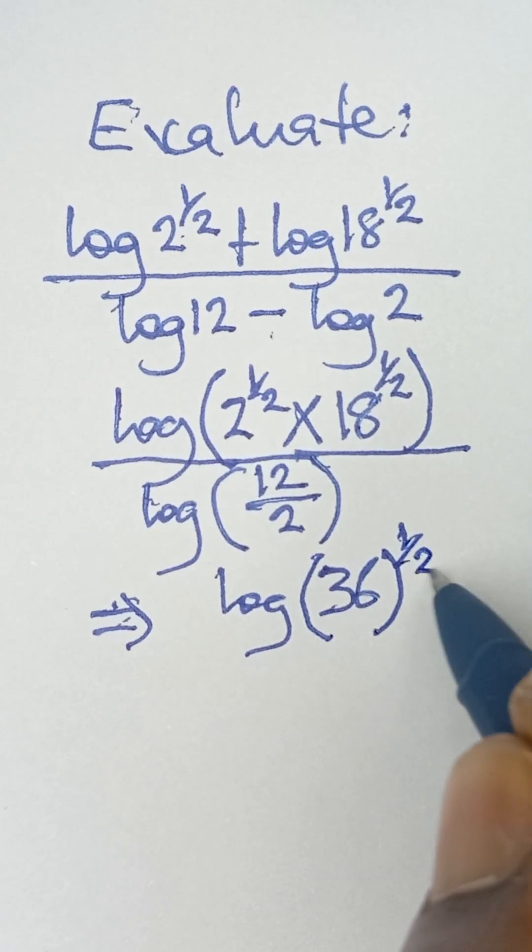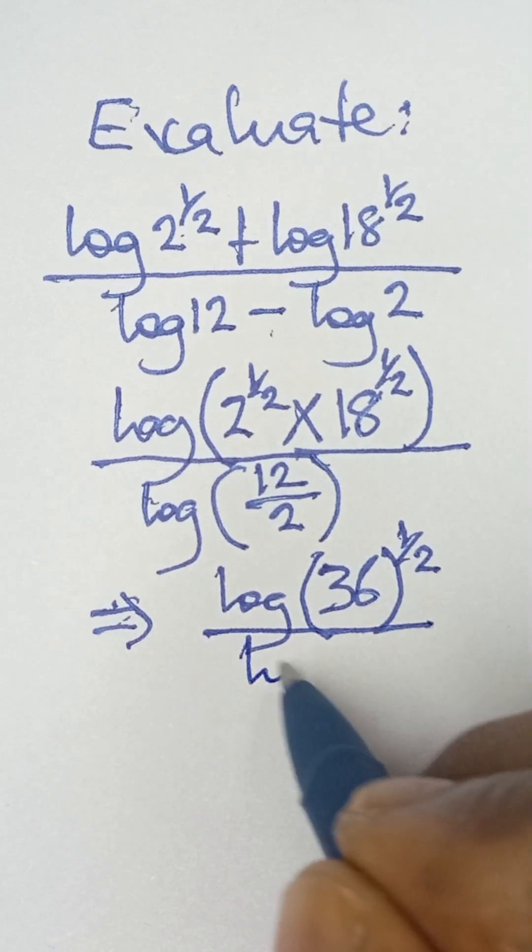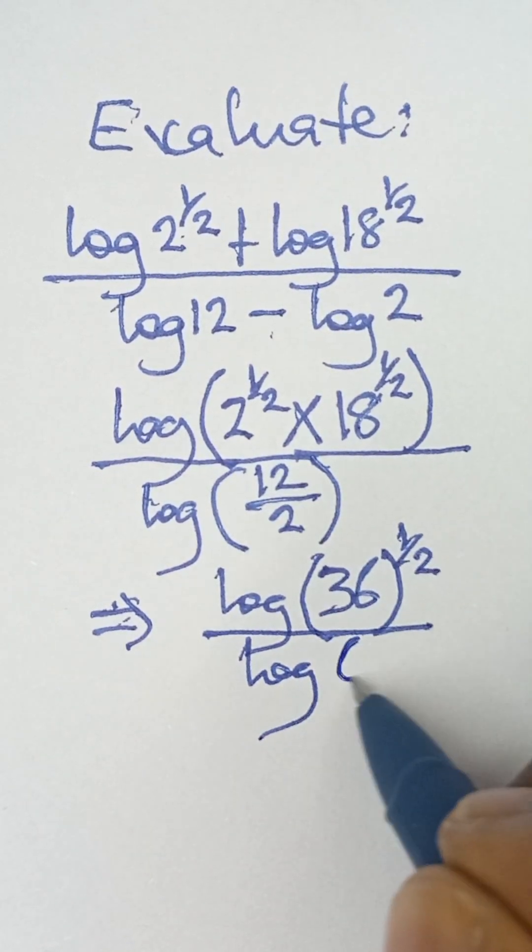Once we multiply them, then we write the power half. And then all divided by log 12 divided by 2 is 6.